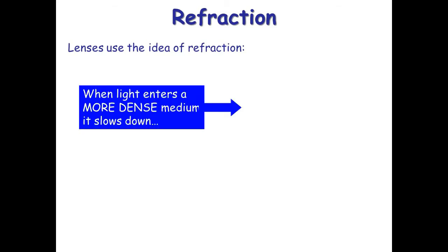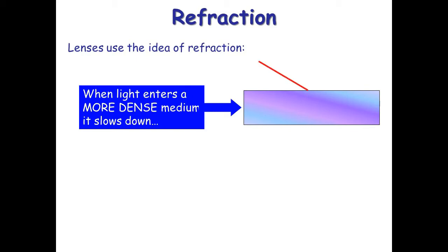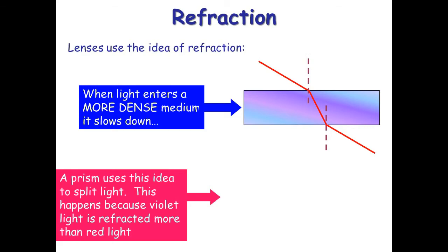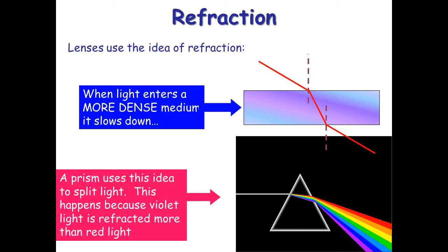Refraction is where light changes direction because it slows down or speeds up. Light going from air into glass slows down and bends towards the normal. As it emerges from glass into air it bends away from the normal. A prism bends light differently — as it emerges it bends further away from the normal, dispersing white light into the seven colors. Violet light is refracted more than red light.